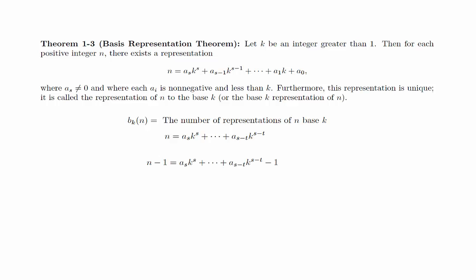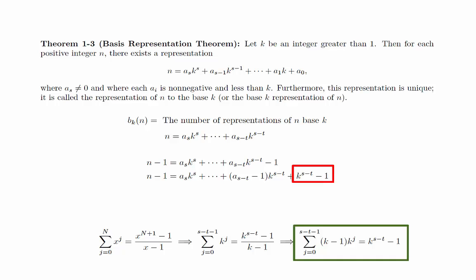We will subtract 1 from both sides of the equation. Notice that since the last coefficient is non-zero, we can pull out one of them and rewrite the equation like this. We can now use the formula for the sum of a finite geometric series with x equal to k on these terms to get this.